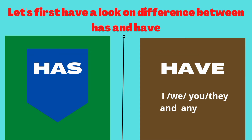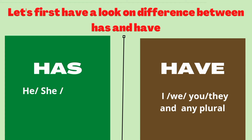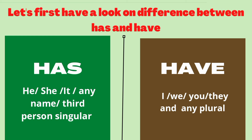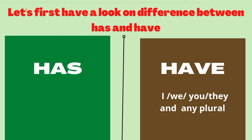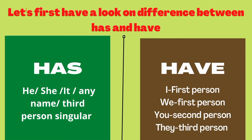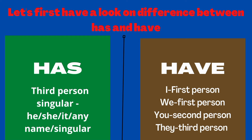Have is used with I, we, you, they, and any plural. I is considered to be a plural also. Has is used with he, she, it, any name, or singular. It is third person singular. I is first person, you is second person, they is plural third person. So we use have with first and second person and plurals, and has with third person singular — he, she, it, or any name.